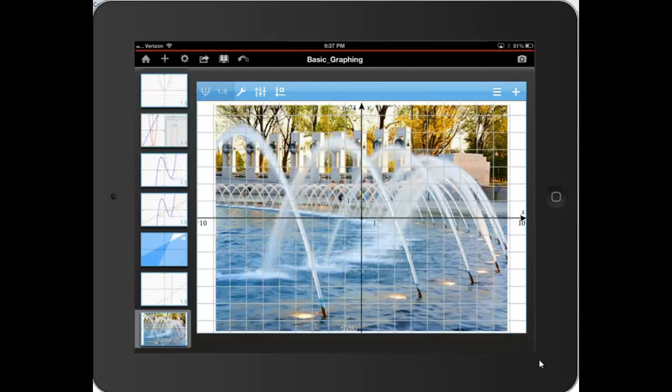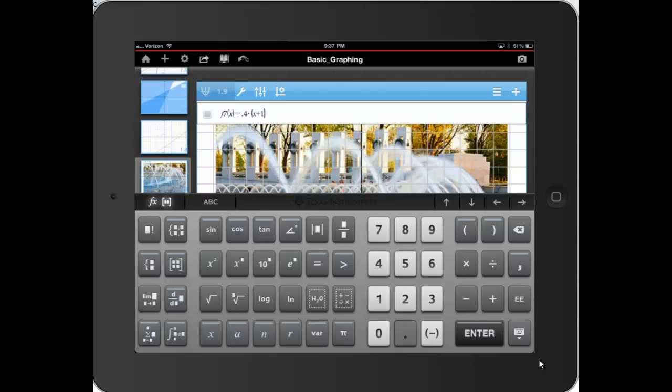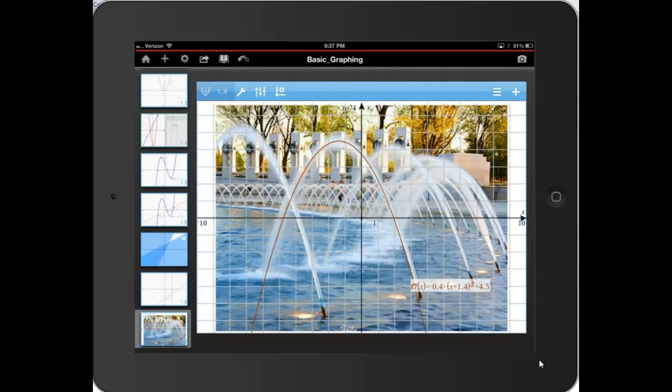And I'm going to try to model one of those with a parabola. And since I've done this already, I'll just go right to it. Though this would be a great activity for students. I think negative .4 times the quantity of x plus 1.4, the quantity squared, plus 4.5 should be decent. But notice all the good mathematics that students would have to do in order to be able to do that. So this is a pretty powerful activity.